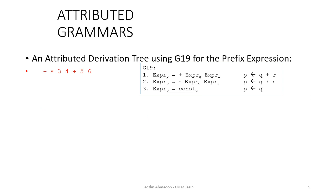Let's demonstrate attributed grammar by building the tree for the expression: plus times 3 4 plus 5 6. This is a prefix expression and we're going to build the tree using Grammar 19. Just like all other attributed derivation trees, we're going to start with the starting non-terminal. Since all three rules of Grammar 19 start from non-terminal expression, we look at the symbols one by one. Currently we're trying to draw the tree for the symbol plus, and the rule that has plus in its selection set is rule one.